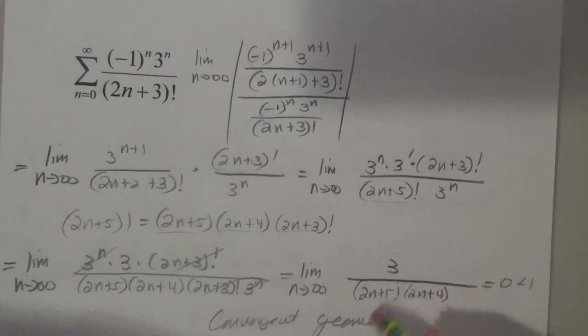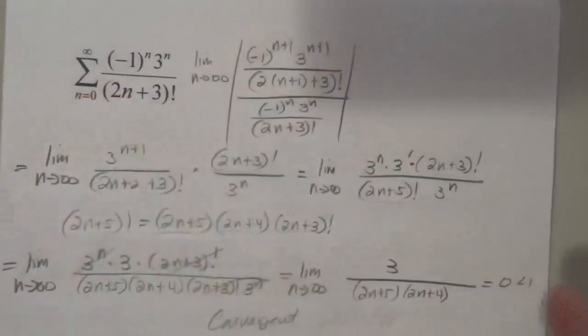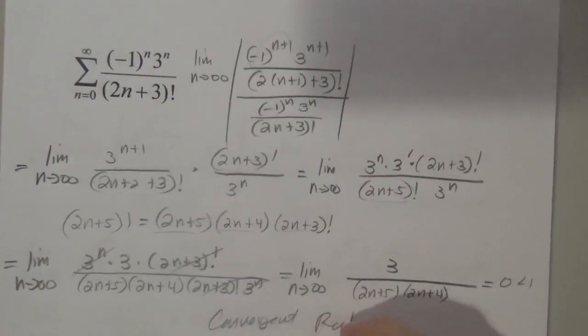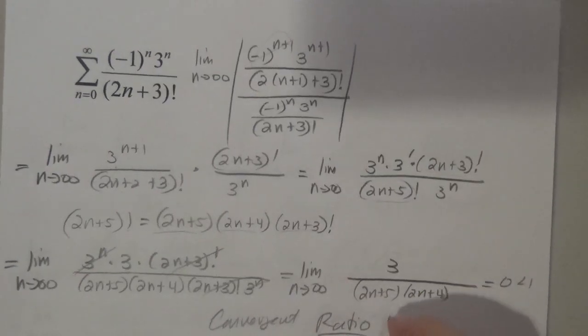Not geometric—geometric on the brain, probably said geometric a bunch of times, sorry—convergent ratio test.